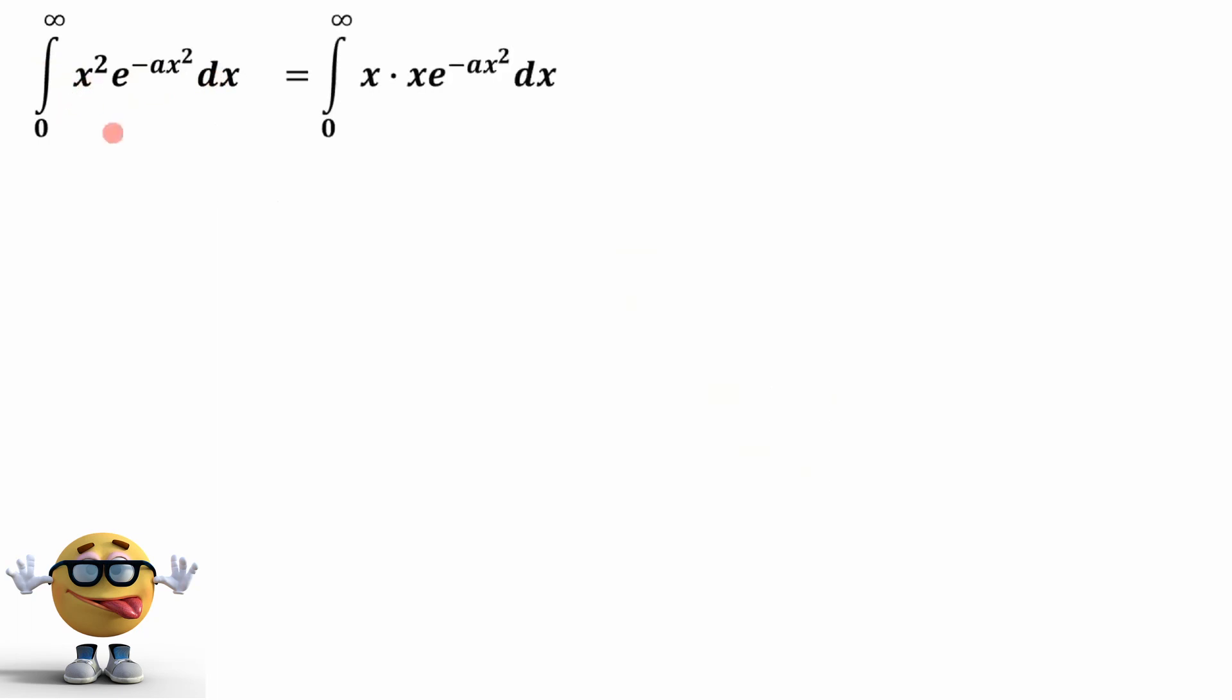So the first thing we're going to do is integration by parts, but we're going to split up the x squared before we do the integration by parts. The integration by parts is the integral of udv equals uv minus the integral of vdu, and we're going to